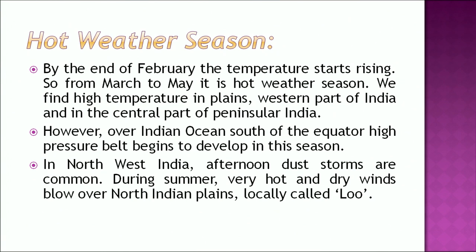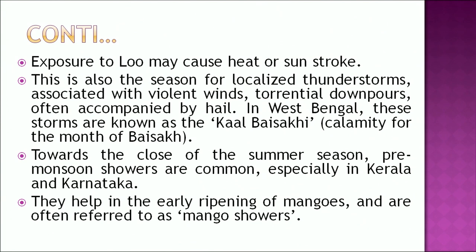By the end of February the temperature starts rising, and from March to May it is the hot weather season. We find high temperatures in the plains, western part of India, and the central part of Peninsular India. In northwest India, afternoon dust storms are common. During summer, very hot and dry winds blow over the north Indian plains, locally called loo, and exposure to loo may cause heat or sunstroke. This is also the season for localized thunderstorms with violent winds and torrential downpours. In West Bengal, these storms are known as Kalboshakhi. Pre-monsoon showers in Kerala and Karnataka, often called mango showers, help in the early ripening of mangoes.